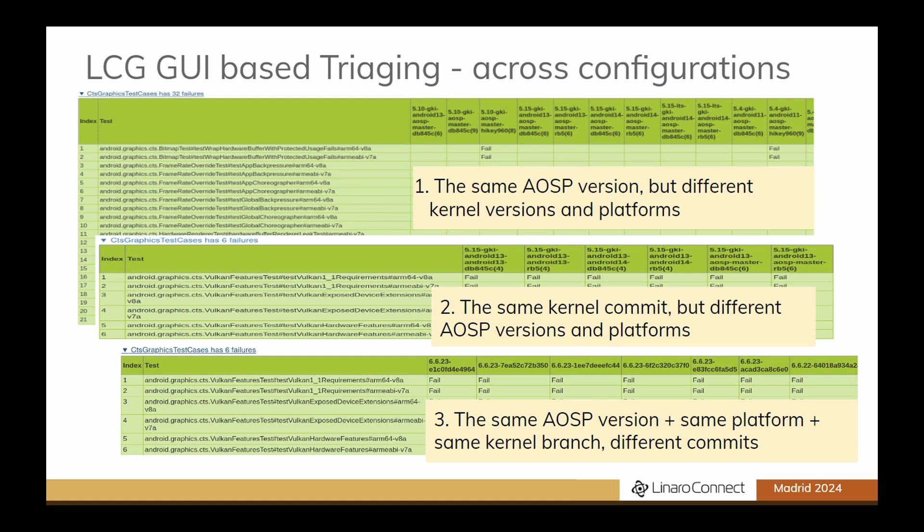The third example is about failures reported by the same configuration — that's the same AOSP version, same platform, and same kernel branch — but from different kernel commits. From the page here, it can be seen that the failures are reported by the last 10 builds.